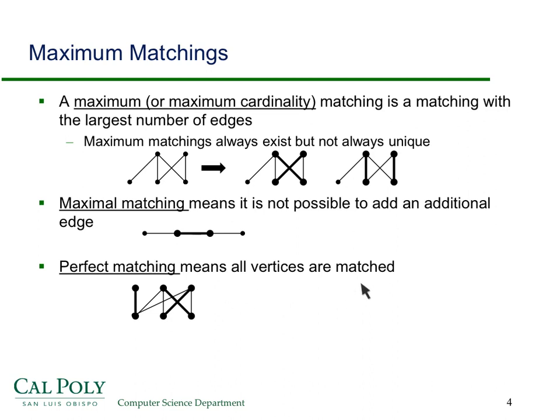Perfect matching means all the vertices are matched. For instance, here's a bipartite graph. Notice that U has to have the same cardinality of V in order to possibly have a perfect matching.